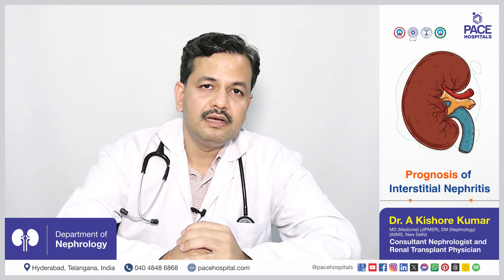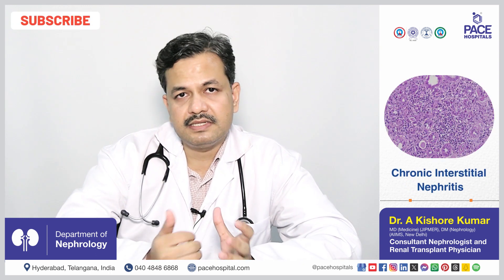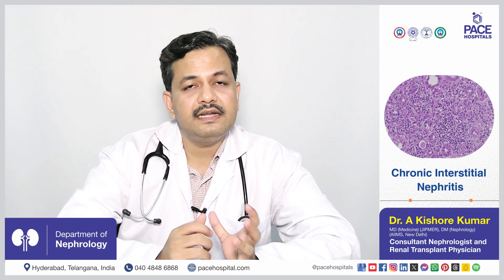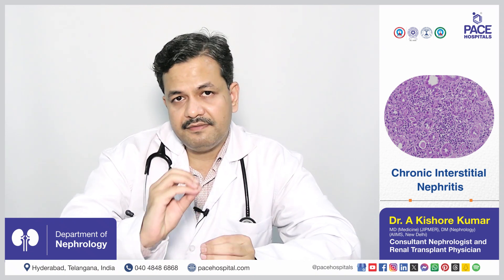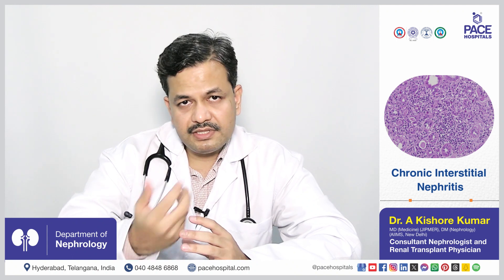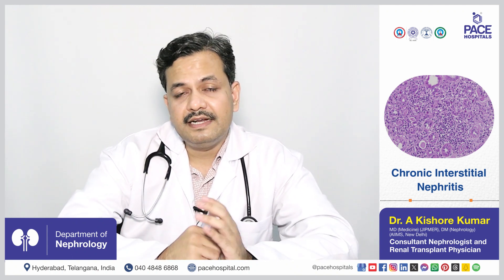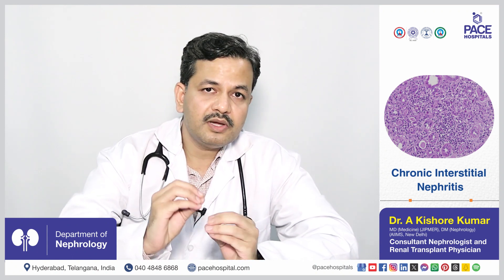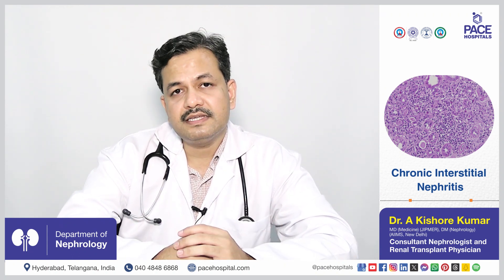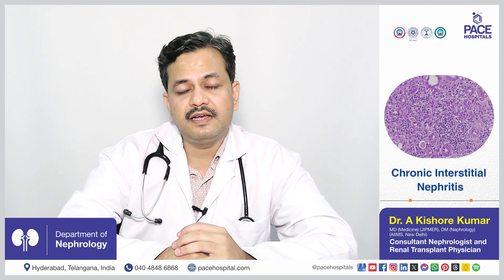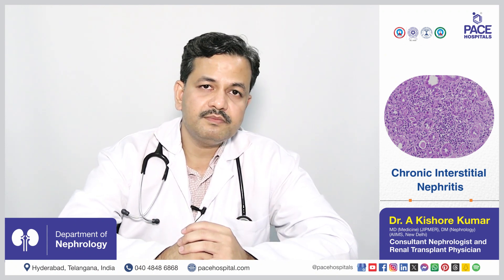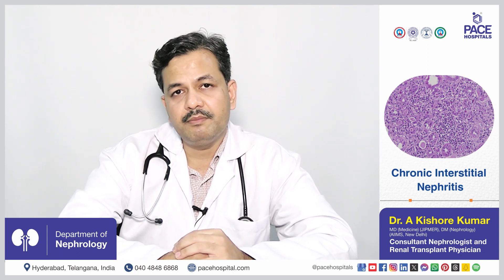The prognosis depends on whether it is acute or chronic interstitial nephritis and on identification of the cause. If the patient has acute interstitial nephritis and a specific drug or condition is identified, stopping the drug, treating the condition, and giving steroids can lead to full recovery. If the damage is permanent or there is no identifiable cause, steroids may be tried but recovery is not guaranteed, and ultimately the patient may land up in kidney failure.